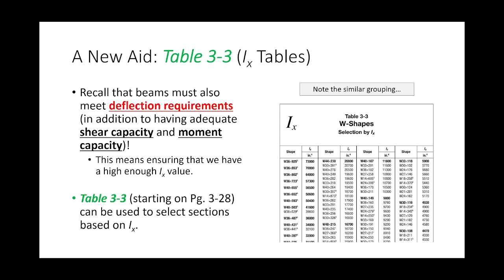A new design aid is Table 3-3, which only takes up a couple of pages of the manual. I'm calling it the Ix tables. In addition to designing beams to meet strength requirements, we also need to design them to meet service limit states. Sections are organized by Ix — similar grouping, with the bolded upper row being the lightest shape within each group, sorted by moment of inertia rather than Zx.